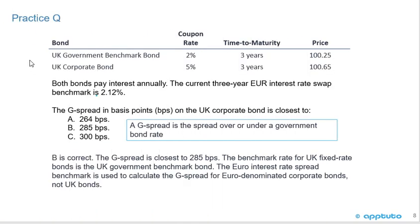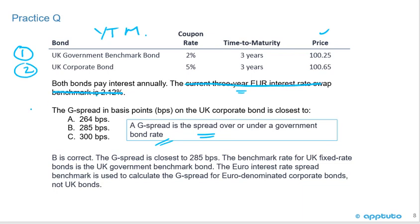Calculating this is straightforward. Step one: calculate the yield to maturity on the government benchmark bond from its price. Step two: calculate the yield to maturity on the corporate bond. The G spread is the difference — the spread over or under a government bond rate. Note: the 3-year euro interest rate swap benchmark of 2.12% is not needed here; that would be used for an I spread calculation, not a G spread.